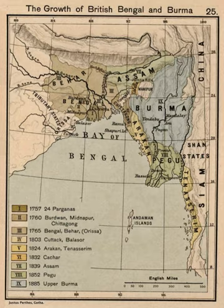There were a total of 30 districts, including Dhaka, Maimesing, Faridpur, Bakargunjay, Tipora, Nokali, Chittagong, the Chittagong Hill Tracts, Rajshahi, Dhinajpur, Jalpaigari, Rangpur, Bogra, Pabna, Malda, Golpara, Komroop, Daring, Nogong, Sibsagar, Lakimpur, Silhet, Kachar, the Garo Hills, the Kasi and Jaintia Hills, the Naga Hills and the Lushai Hills. Kuch Behar fell under the jurisdiction of Rajshahi Division, Manipur under the Assam Valley Division and Hill Tipora under Chittagong Division. The provincial government in Dhaka also managed relations with Bhutan.